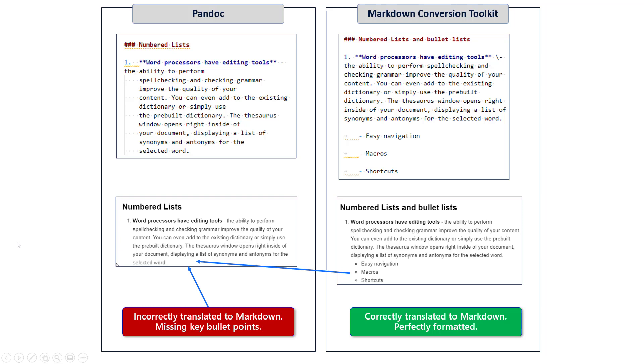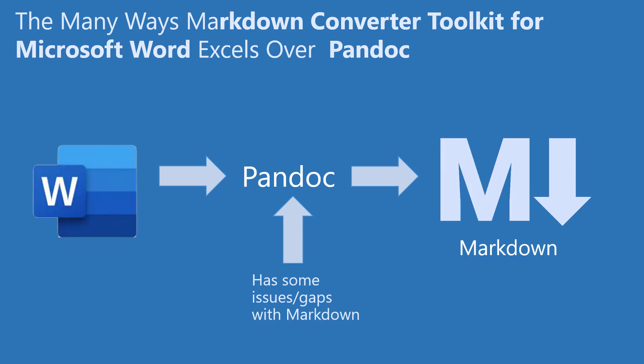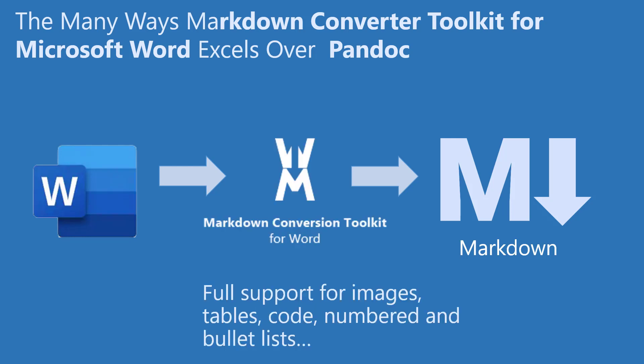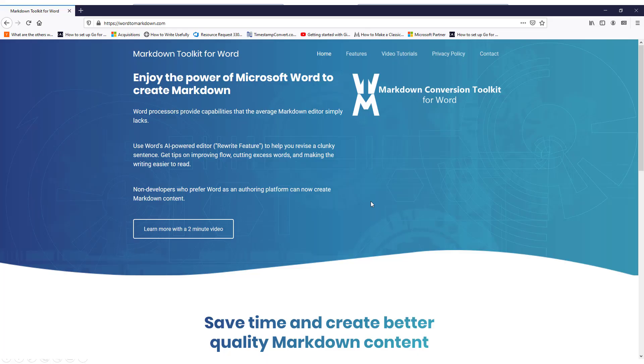So that wraps up this demonstration comparing the features. To summarize, Pandoc does a really poor job with images, with tables, with code, and bullet lists. So check out the Word to Markdown Toolkit — simply check it out at wordtomarkdown.com.